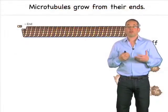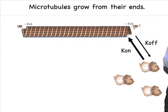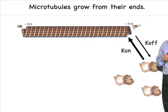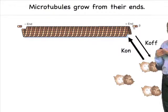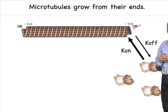The interesting thing about microtubules is that they grow from their ends. So, you have a polymer, which is the tube, and individual subunits come onto the ends, and they leave the ends. And therefore, you have an on-rate of tubulin subunits and an off-rate. And the growth of microtubules is defined by these different rates.